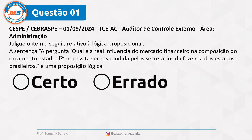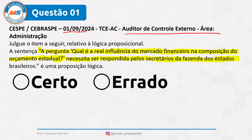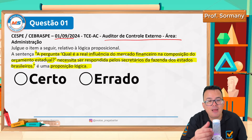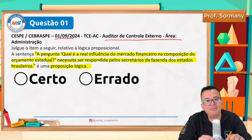Questão 1, para auditor de controle externo do TCE: julgue o item relativo à lógica proposicional. A sentença — 'Qual é a real influência do mercado financeiro na composição do orçamento estadual, necessita ser respondida pelos secretários da Fazenda dos estados brasileiros' — é uma proposição lógica? Muita gente foi marcando errado porque viu uma pergunta, e pergunta não é proposição.